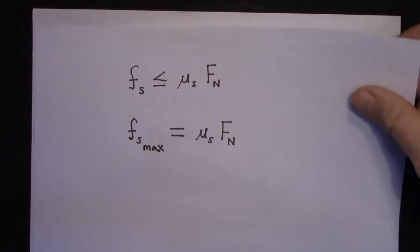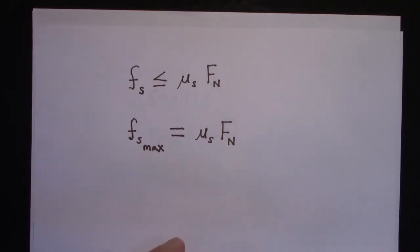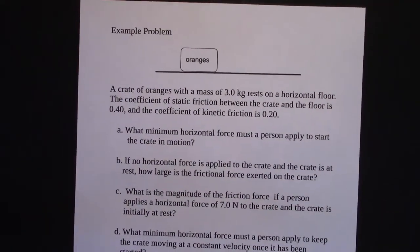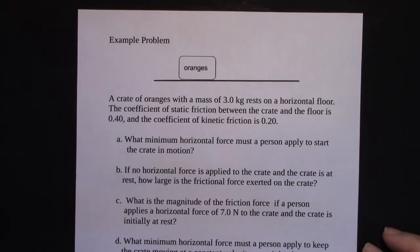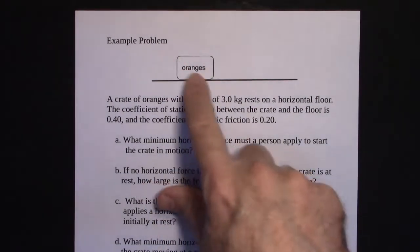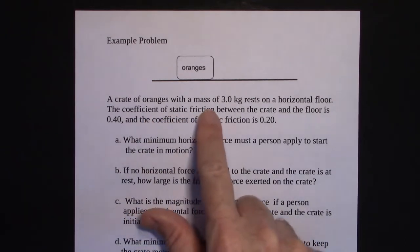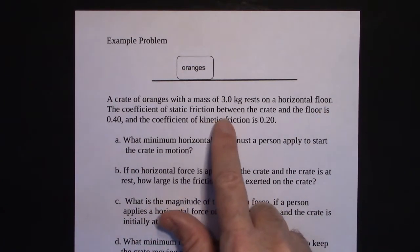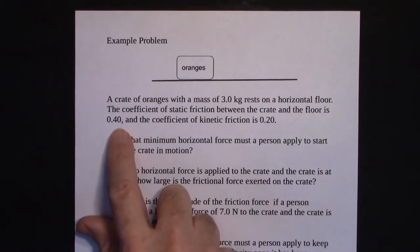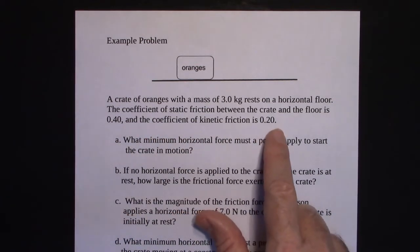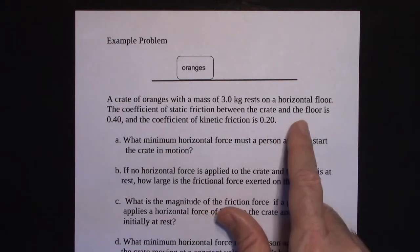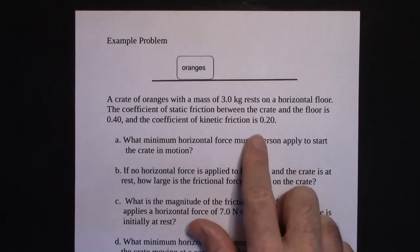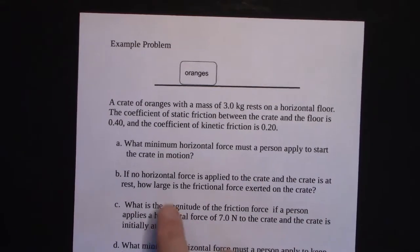Let me use an example problem that's really good at explaining the nuances of static friction. It's a longer problem but I'll go through the whole thing. We have a crate of oranges with a mass of three kilograms resting on a horizontal floor. The coefficient of static friction between the crate and the floor is 0.4, and the coefficient of kinetic friction is 0.2.